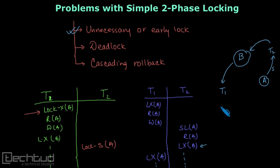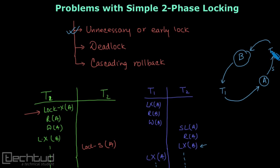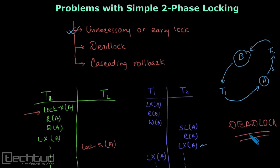Now T1 proceeds and requests an exclusive lock on data item A. This request is also not granted because A is already shared-locked by T2 — and you cannot grant an exclusive lock when a shared lock is held. So T1 is now waiting for A, and T2 is waiting for B — this is a deadlock.